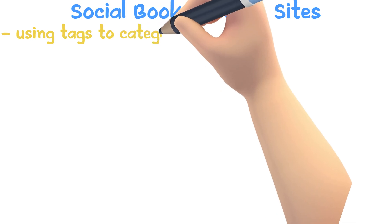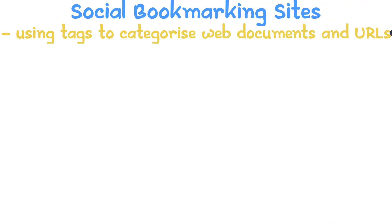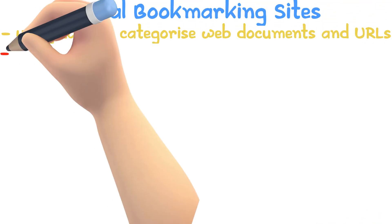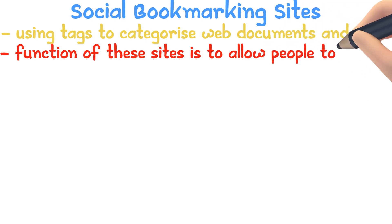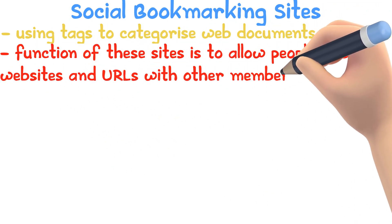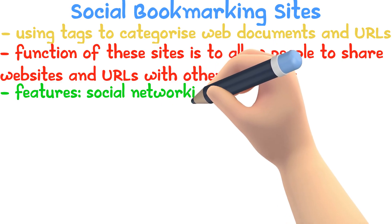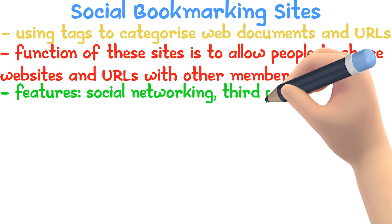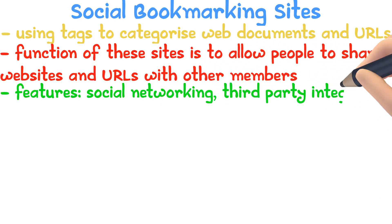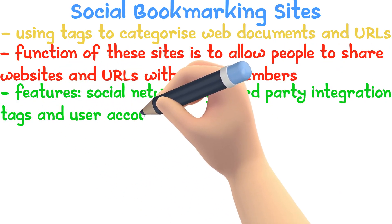Social Bookmarking Sites use tags to categorize web documents and URLs. The function of these sites is to allow people to share websites and URLs with other members. Some features of social bookmarking sites include social networking, third party integration, tags, and user accounts.